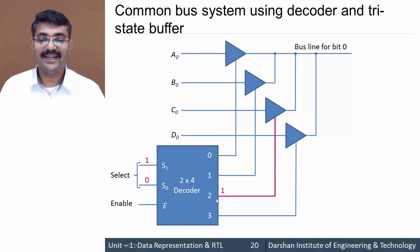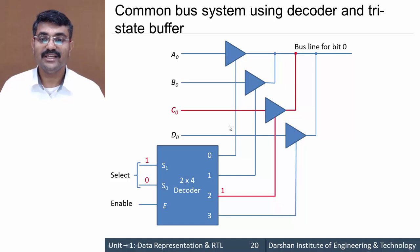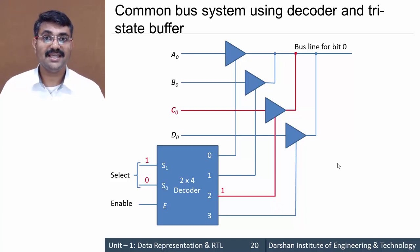The second decoder line produces one, which is connected to the C0 tri-state buffer, enabling it. So C0 input reaches the output common bus line. For a four-bit register, correspondingly C1, C2, and C3 would also be enabled. This is a single stage of a four-bit register common bus system — you can have N number of stages depending on the size of the register. This is the application of tri-state buffer in designing a common bus system using a tri-state buffer and a decoder.